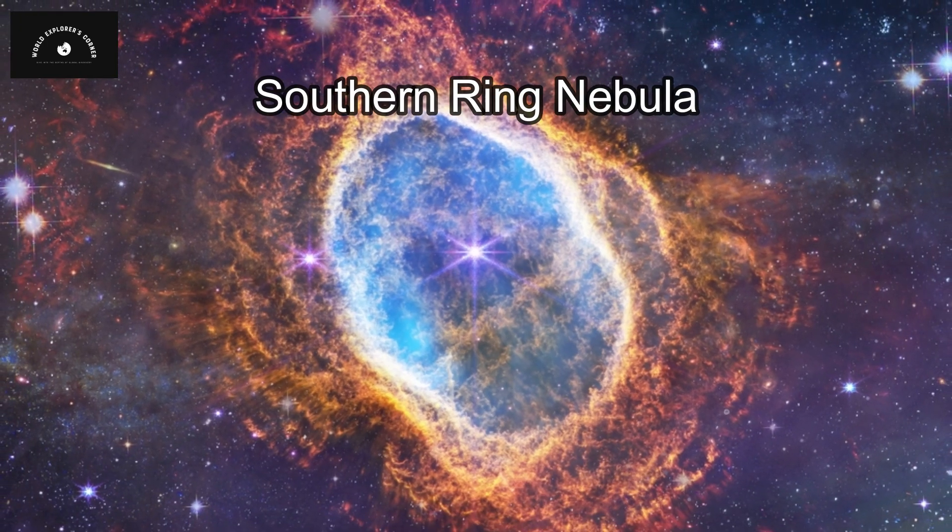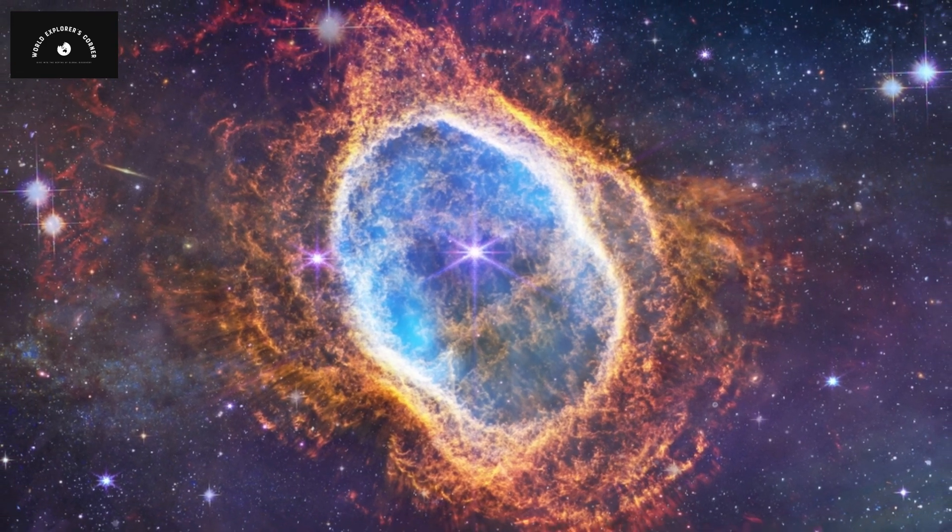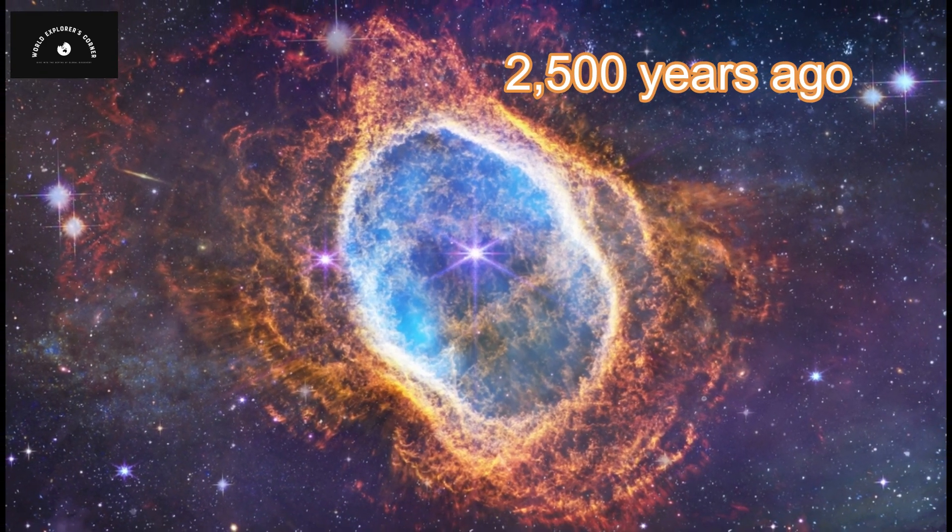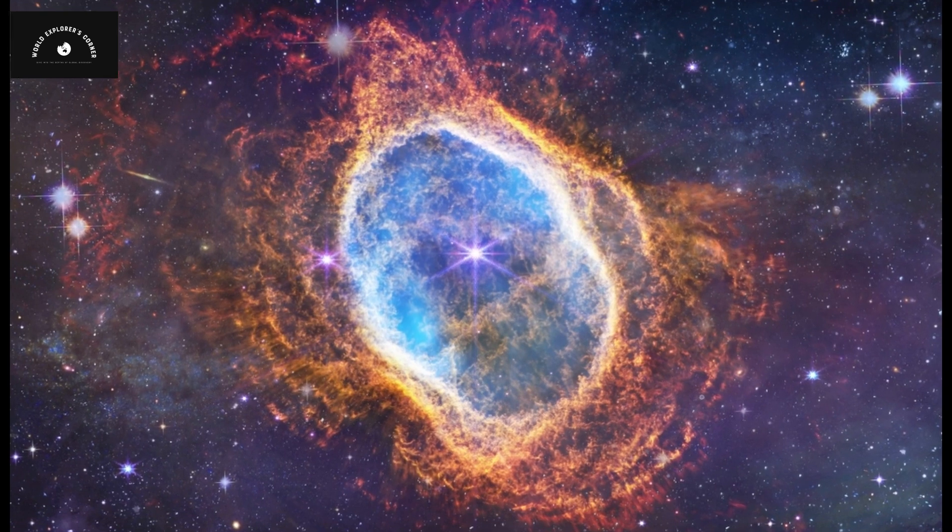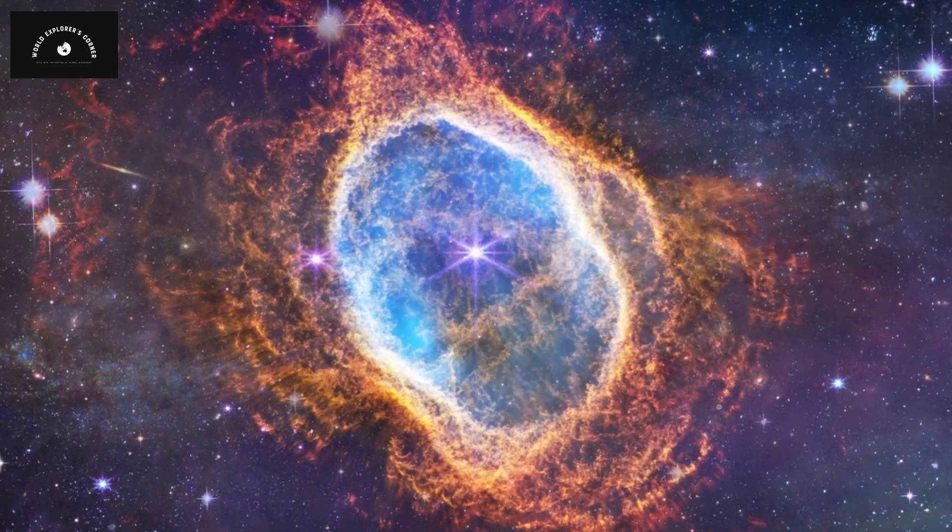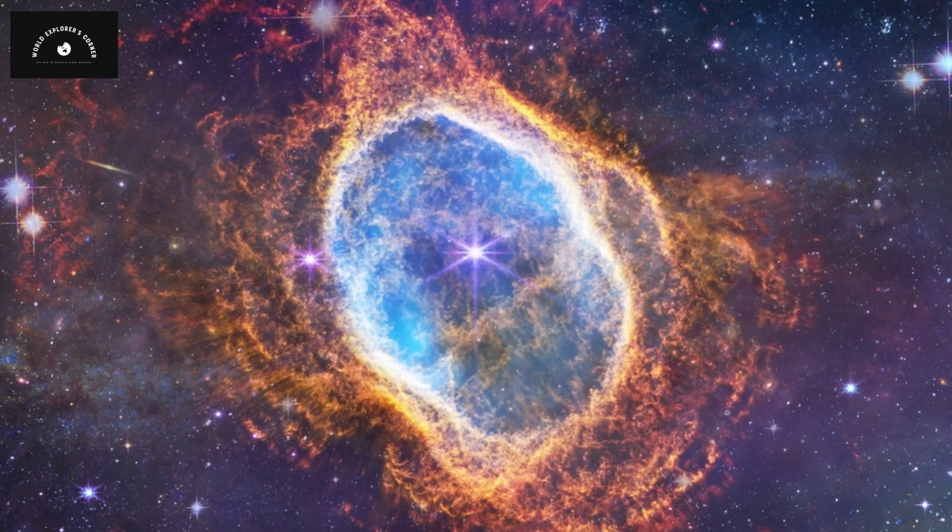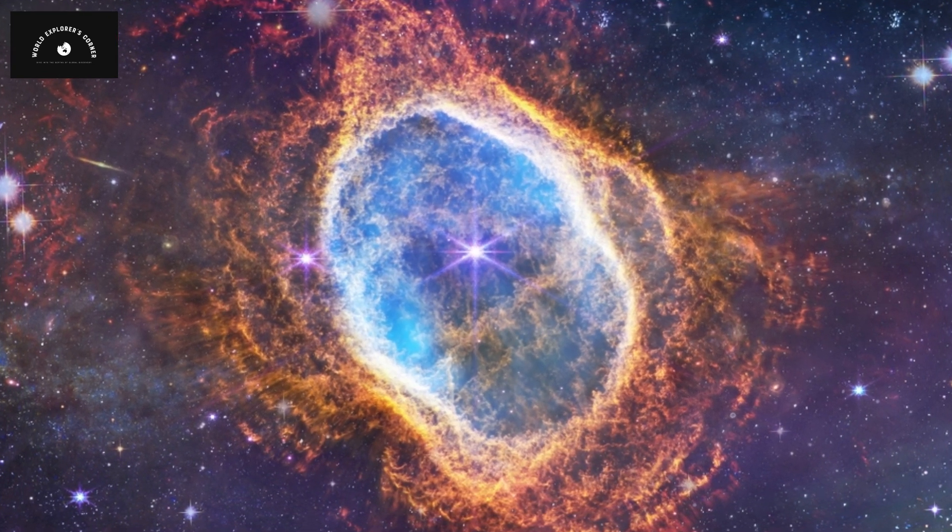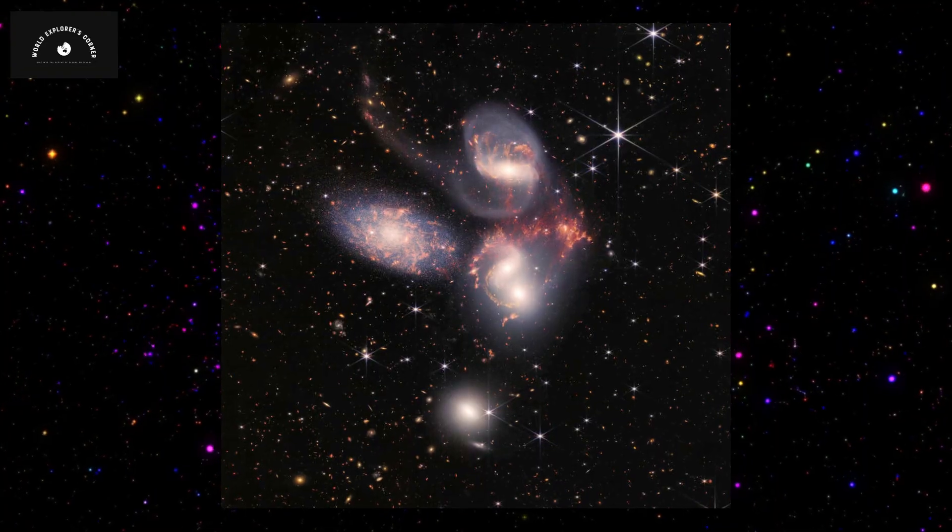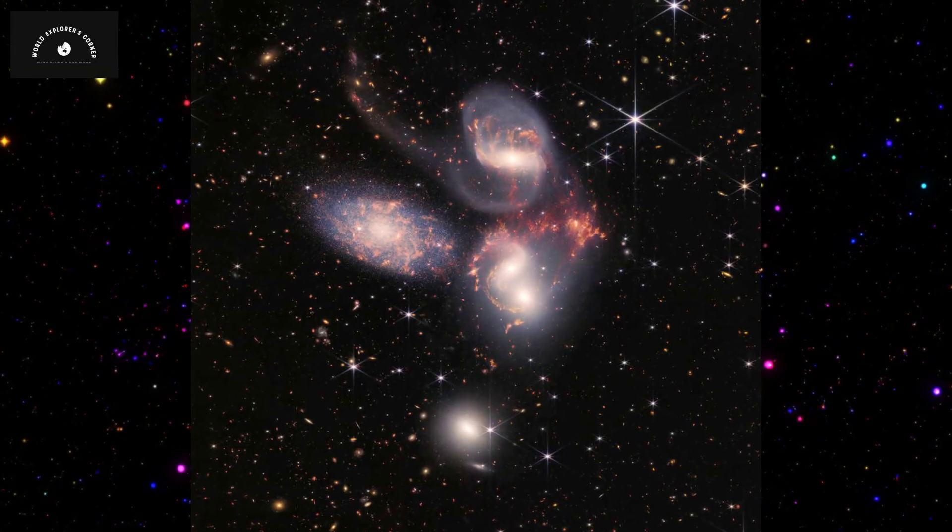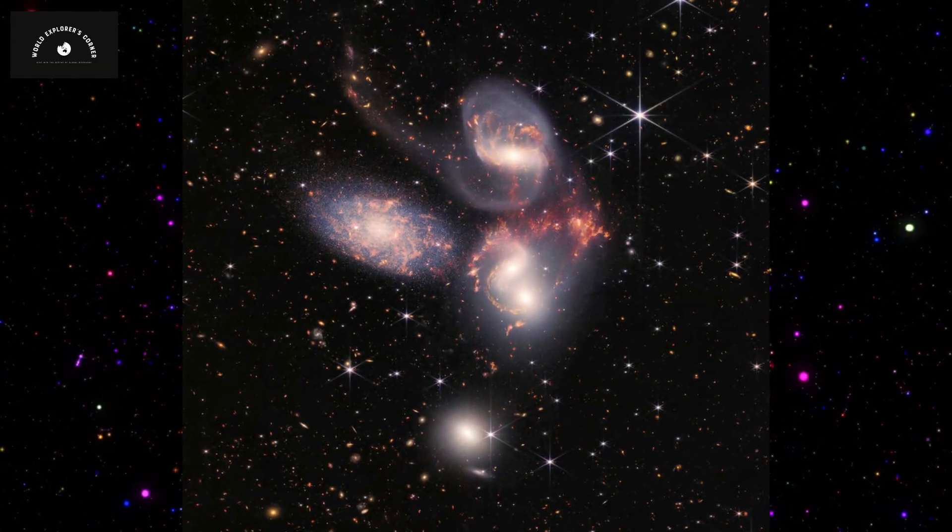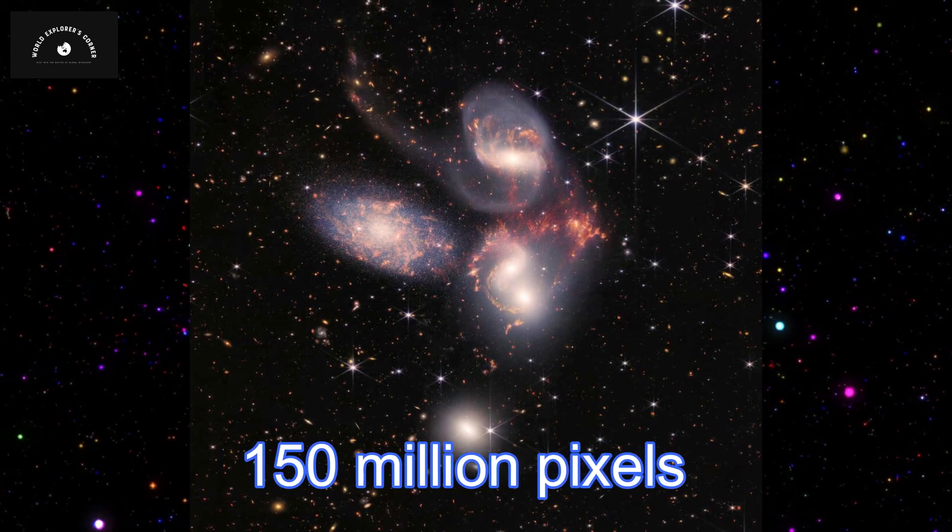The next photo captures a star that was in the process of breaking down 2,500 years ago. You can observe a large bubble of gases and energy captured by two different instruments, NIRCAM and MIRI. This phenomenon is caused by the star's breakdown. This image is the largest one captured by James Webb with a resolution of approximately 150 million pixels.